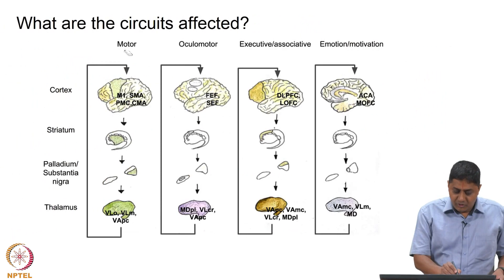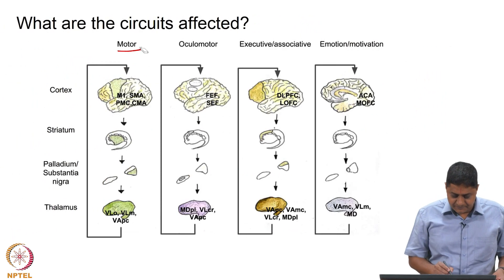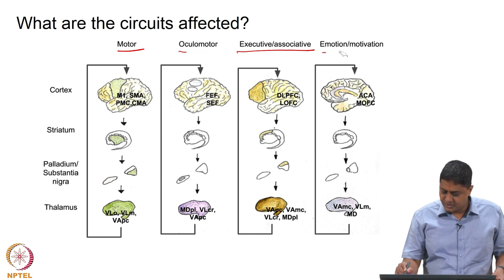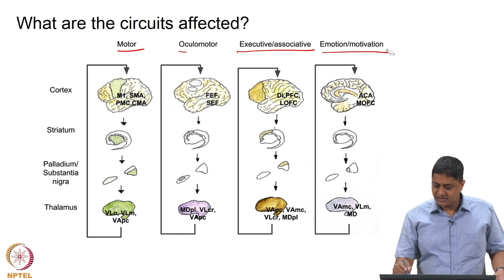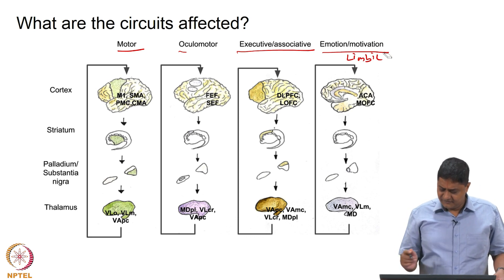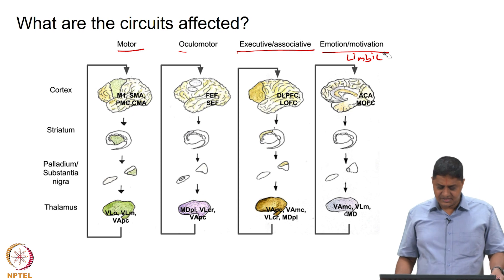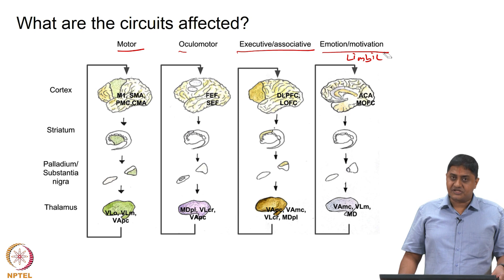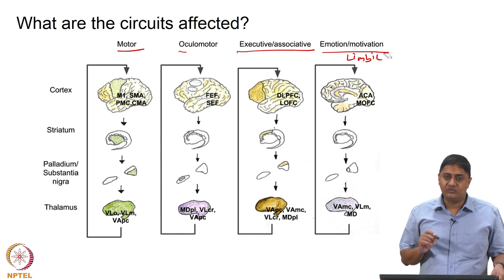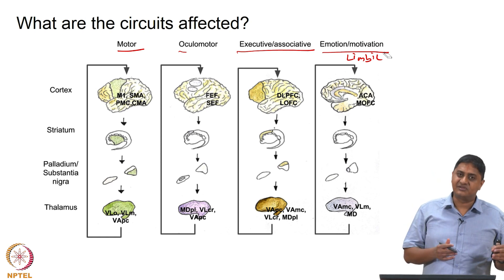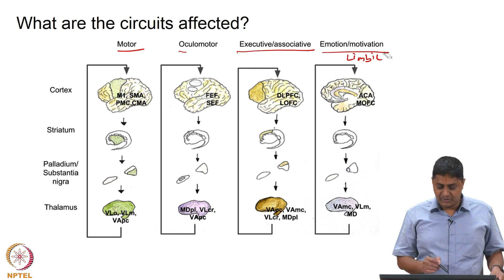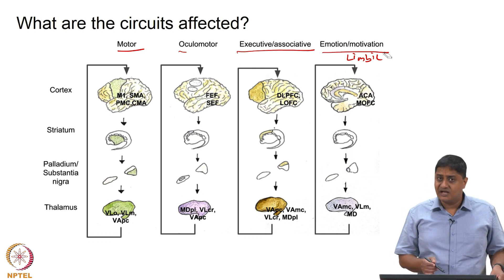What are the various loops that are affected? The motor loop, the oculomotor loop, the executive associative loop, and the emotion-motivation or limbic loop. We discussed which areas of the cortex and which areas of the thalamus project to the basal ganglia, and from the thalamus back to the cortex. If one of these loops is compromised, then that particular function is affected.